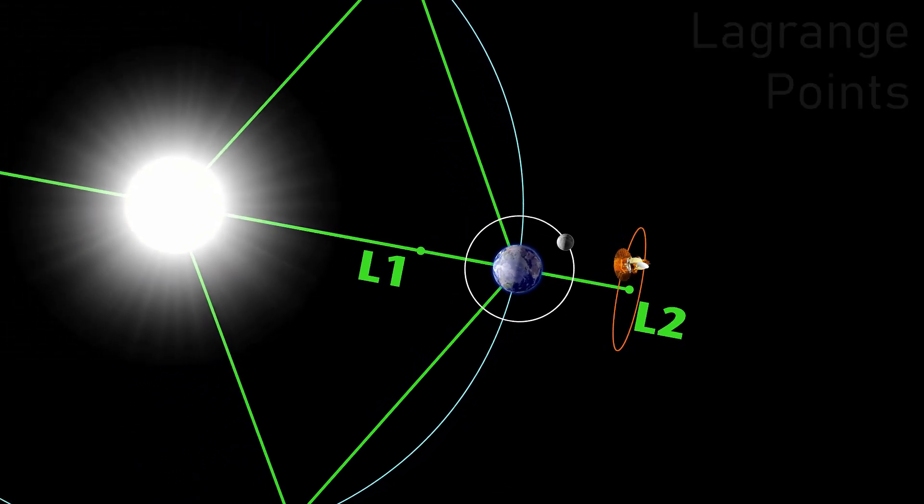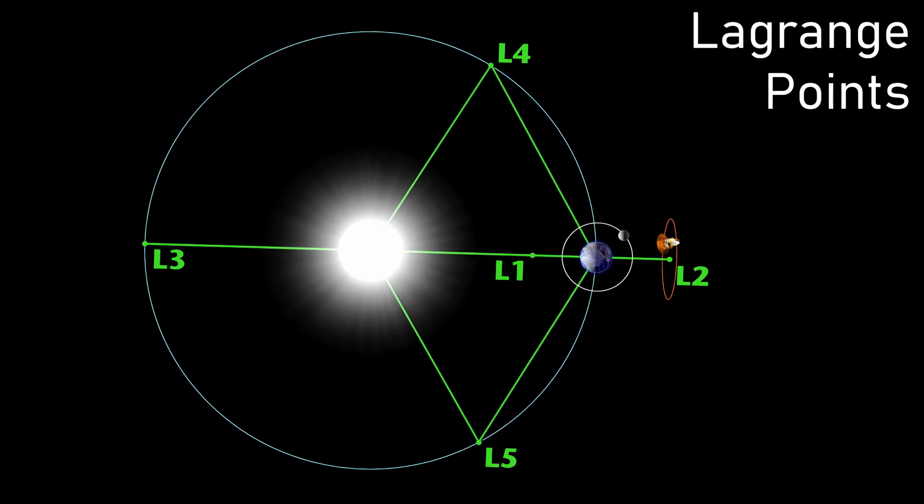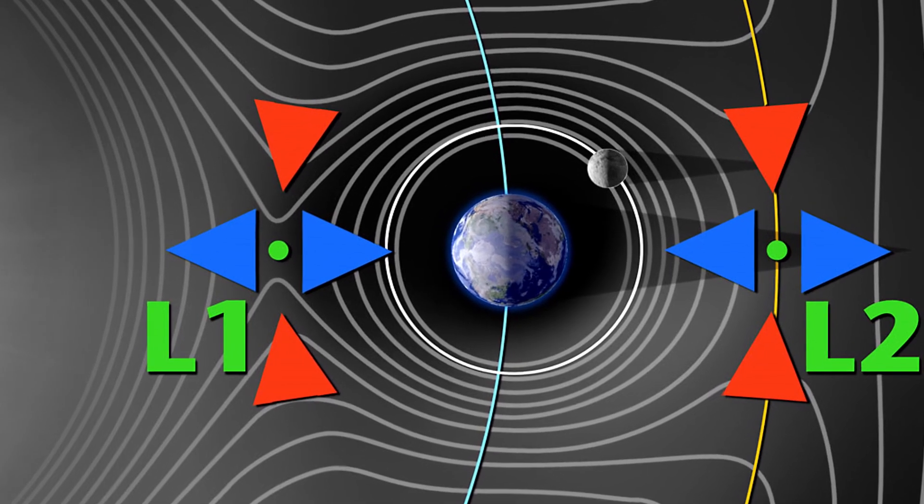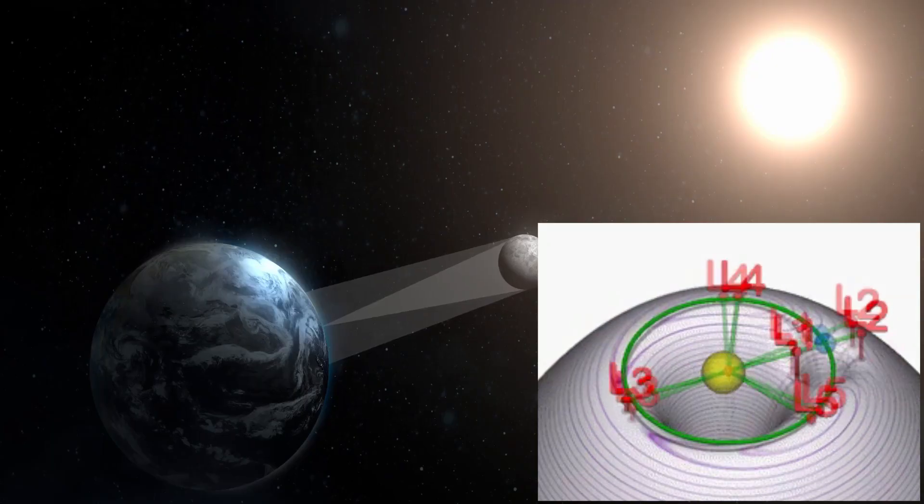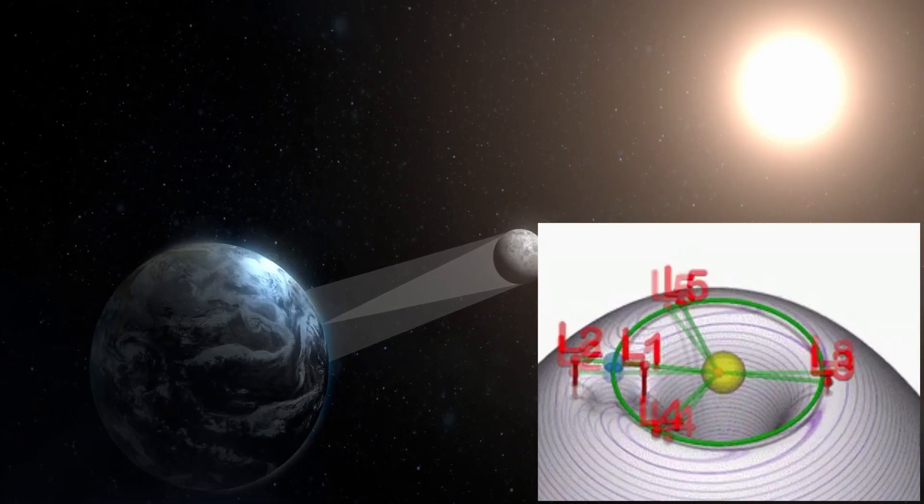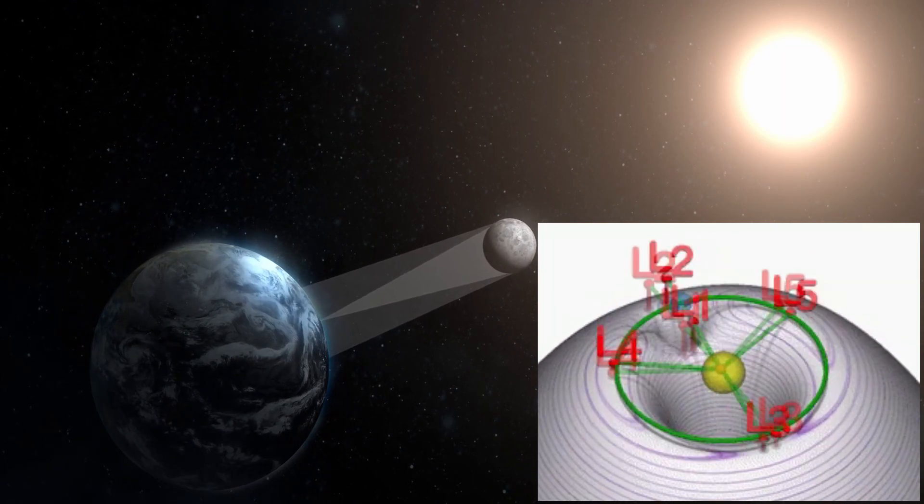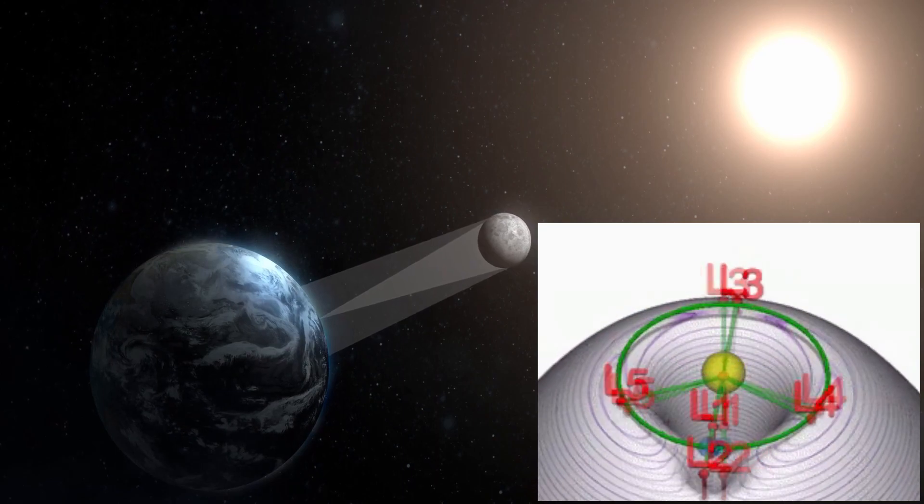The Earth-Moon system produces two stable points called Lagrange points, where you can place an object and it will stay there forever. These are called L4 and L5. There are these less stable points where things will stay, more or less, in place with only minor station keeping. And these are L1, L2, and L3.